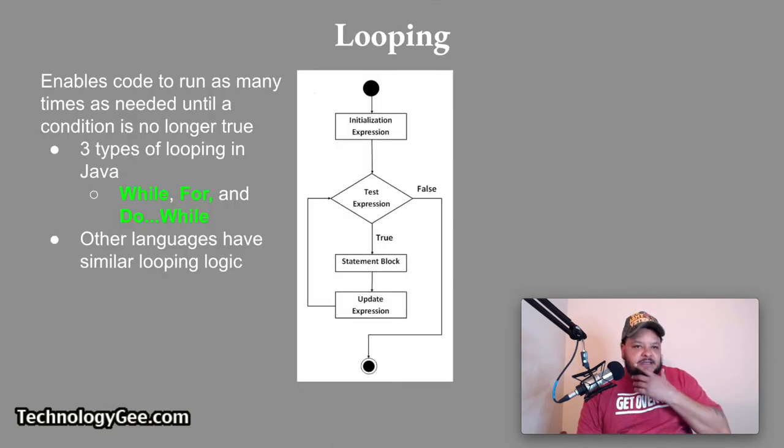Next, we have looping. So to enable code to run as many times as needed until a condition is no longer true, you can use a technique called looping. In Java, there are three types of looping. You have a while loop, a for loop, and a do while loop. Other languages have similar looping logic. So you look at this picture here of a traditional loop. Basically, it presents the initial condition or the initial expression. It tests the expression. And if it fails the test, it goes to, I'm assuming, the end. If it passes, then it pretty much repeats the process until it fails the test.